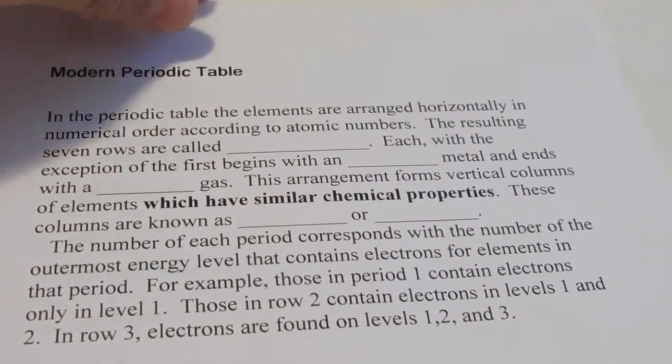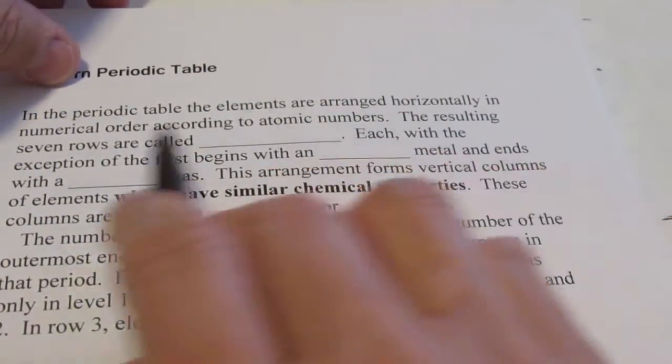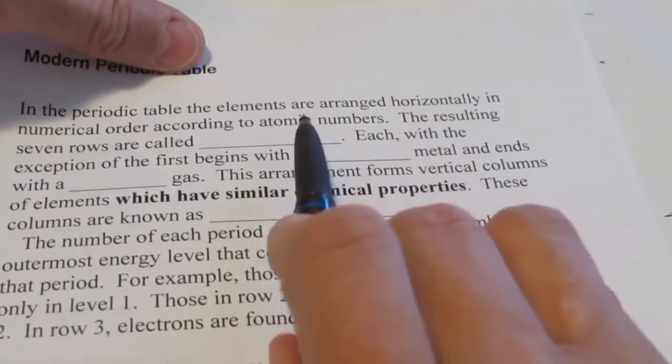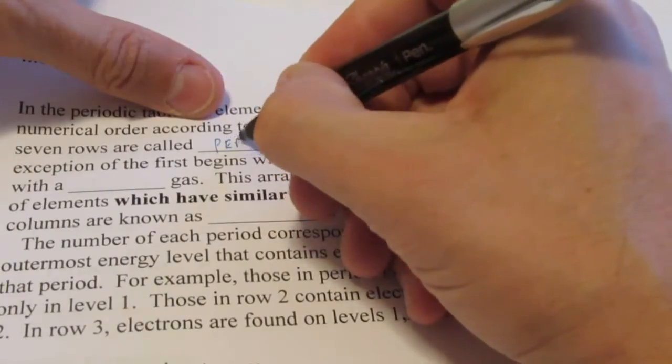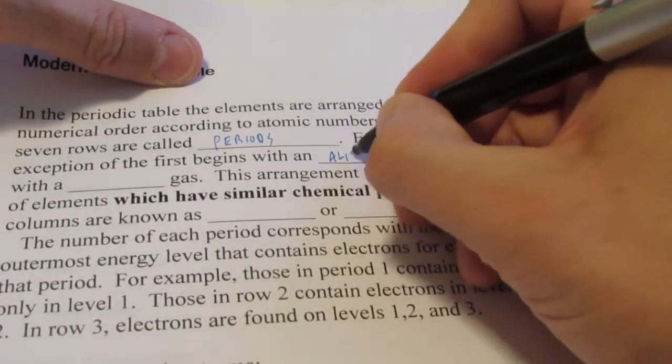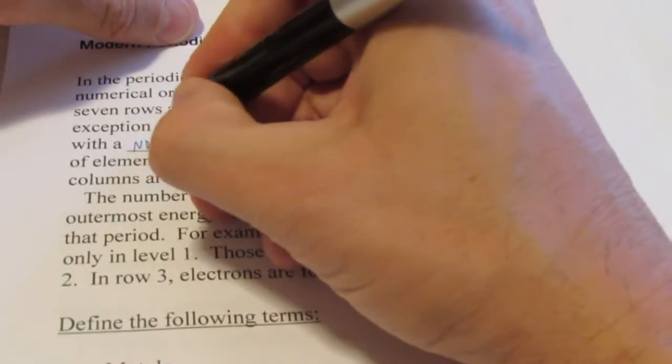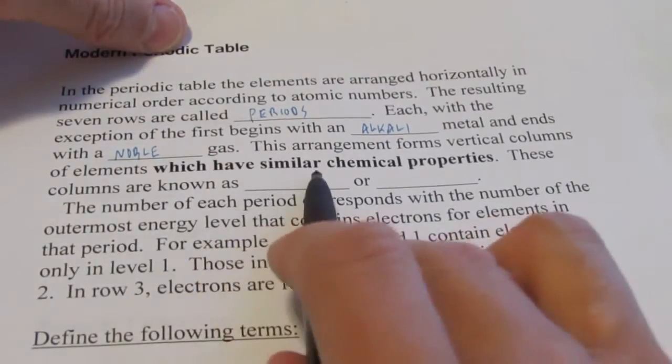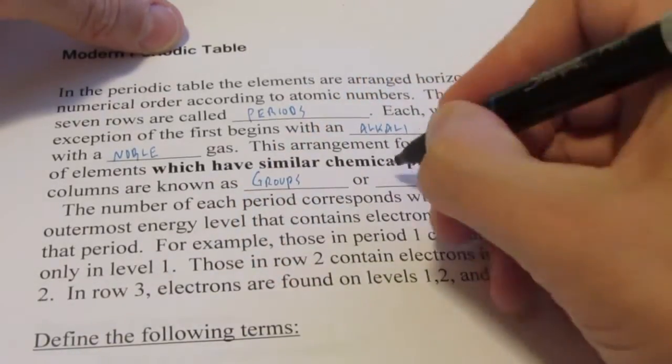Okay, let's get some vocabulary out of the way here. In the periodic table, we will notice that the elements are arranged horizontally in numerical order according to atomic number. Mendeleev did it by atomic mass, that's not the best way to do it. We like to do atomic numbers now. The resulting seven rows are called periods. Each, with the exception of the first, begins with something called an alkali metal and ends with something called a noble gas. This arrangement forms vertical columns of elements which have similar chemical properties. These columns are known as groups or families.